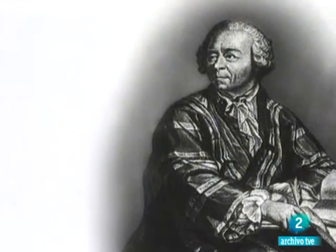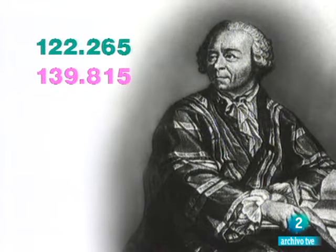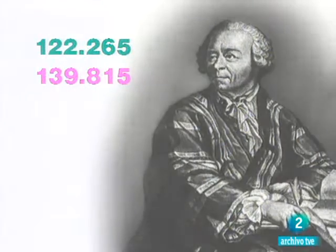Hubo que esperar más de 100 años para que Euler descubriera otra pareja que se le había pasado por alto a Descartes, 122.265 y 139.815. Y además de esta, otras 59 parejas.